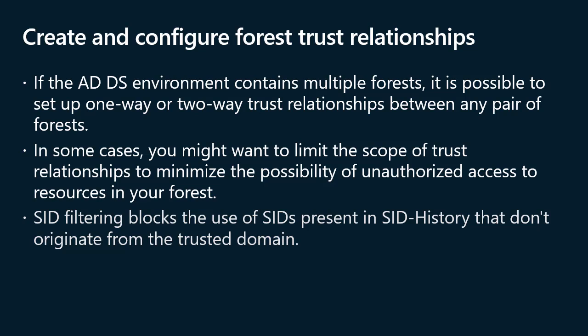By default, when you establish a forest or domain trust, you can enable domain quarantine, also known as SID filtering. When a user authenticates in a trusted domain, they present an authorization request including the SID attributes of all groups they belong to, as well as the SID history attribute of the user and their groups. SID filtering blocks the use of SIDs present in SID history that don't originate from the trusted domain, preventing a potential exploit involving tampering with the SID history attribute to gain unauthorized access to resources in the trusted domain.